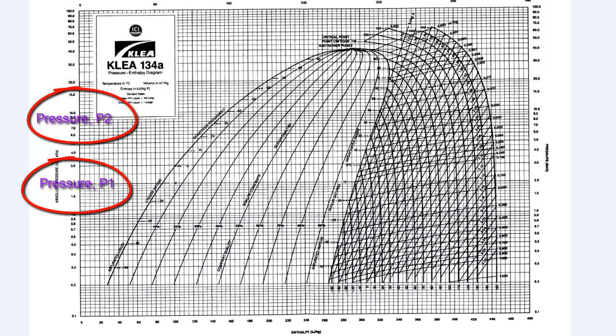Now, from the previous modules, you will note that the low pressure side is for the evaporator, and the high pressure side is for the condenser. So, on this pH diagram, we notice that there is a low pressure and a high pressure, and correspondingly, there is also a temperature.